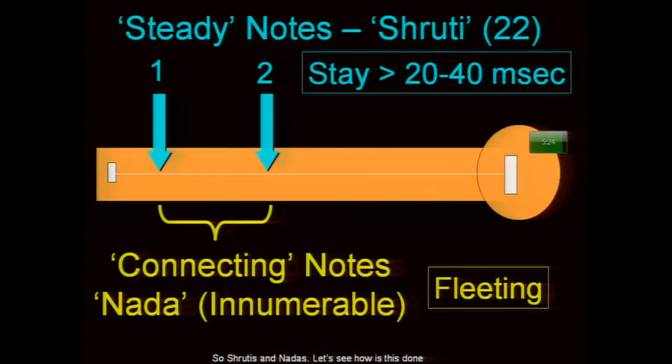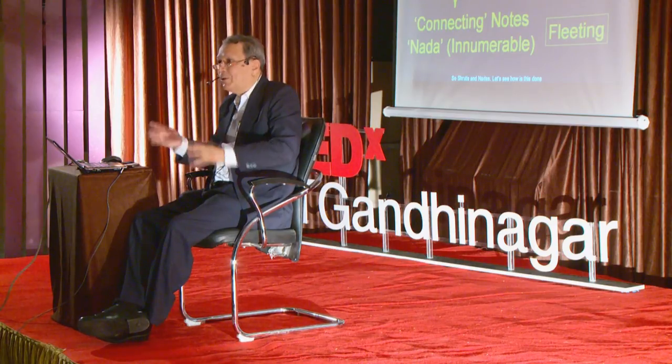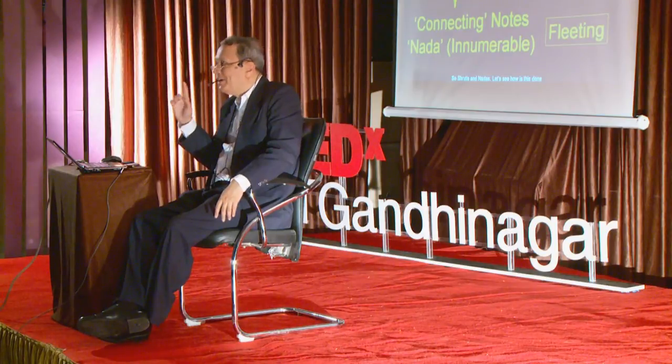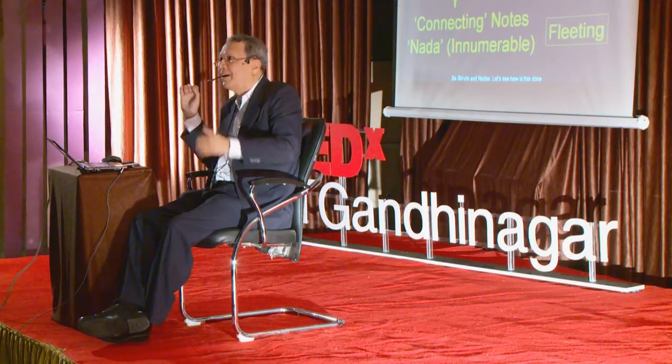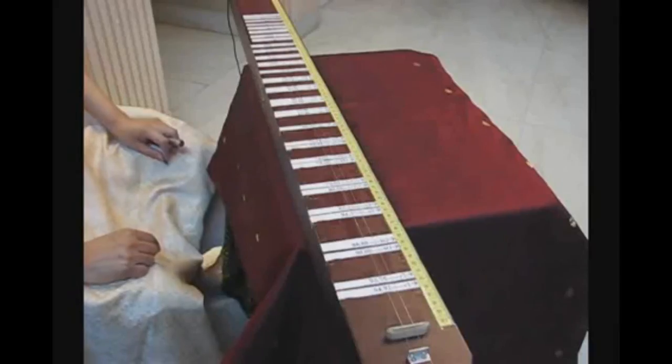We use two types of notes when creating music on a string. First are steady notes called Shrutis — there are 22 of them, and we stay on them for 20 to 40 milliseconds, because that is the time taken by the human ear to perceive, analyze, and understand a musical note. We also use connecting notes called Nadas, which connect the steady Shrutis.